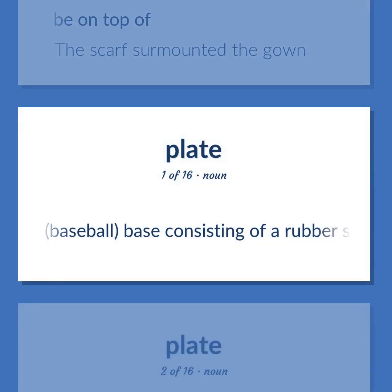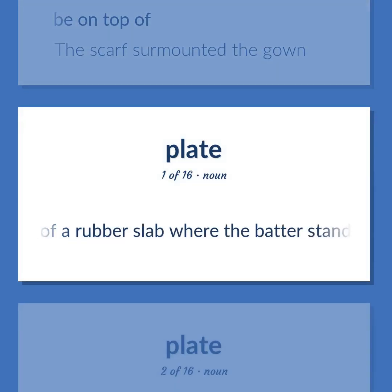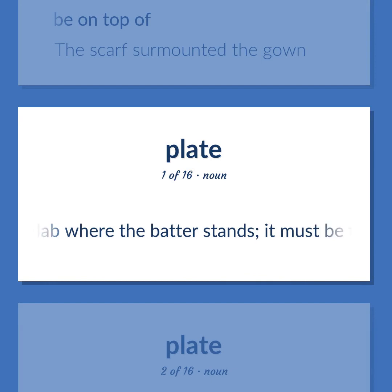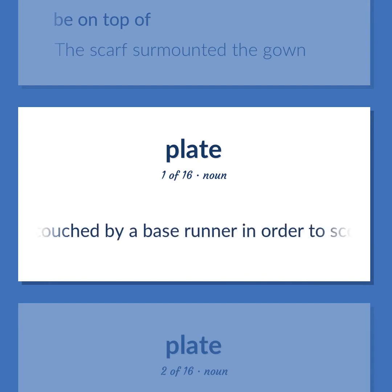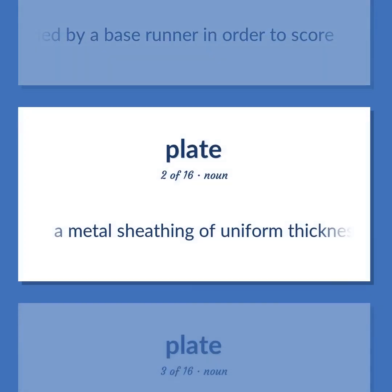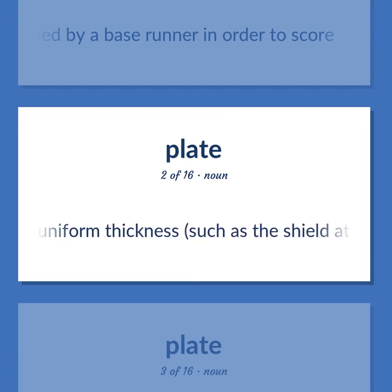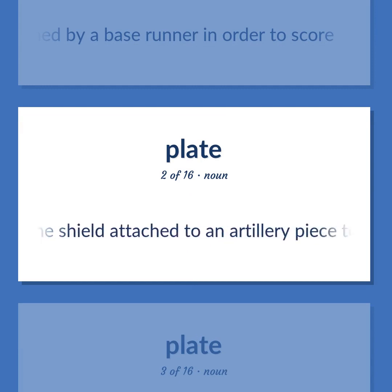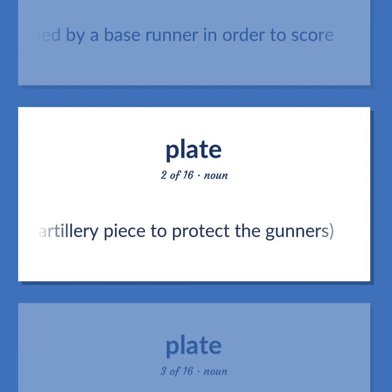Baseball: Base consisting of a rubber slab where the batter stands; it must be touched by a base runner in order to score. Plate: A metal sheathing of uniform thickness, such as the shield attached to an artillery piece to protect the gunners.